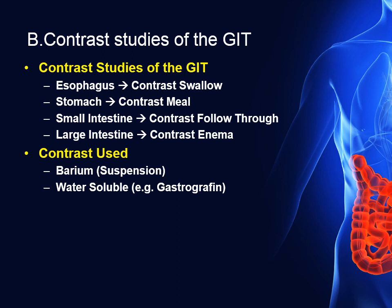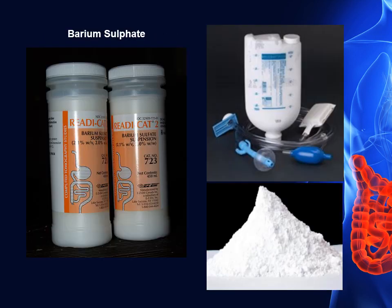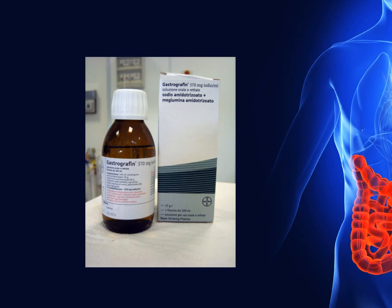Regarding contrast study of the GIT: for the esophagus it's called contrast swallow, for the stomach contrast meal, for the small intestine contrast follow-through, for the large intestine contrast enema. As contrast agents, we can use barium as a suspension or gastrografin as a water-soluble contrast. Here is a picture of barium sulfate, which is a powder we dissolve in water, and here is the gastrografin.